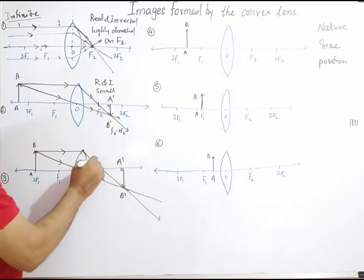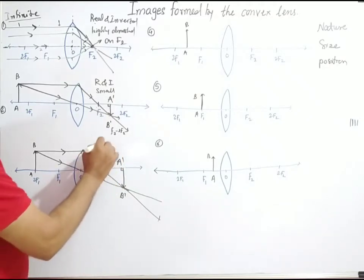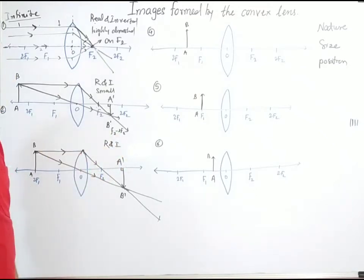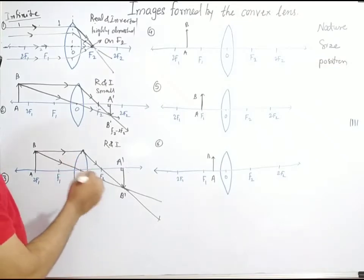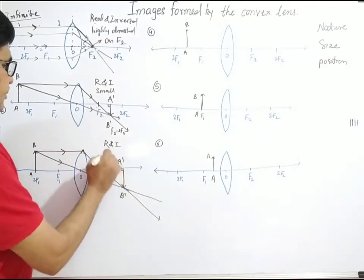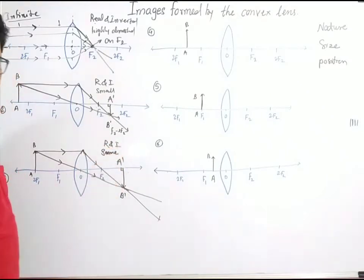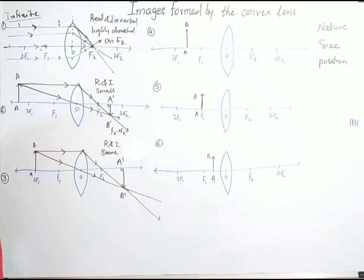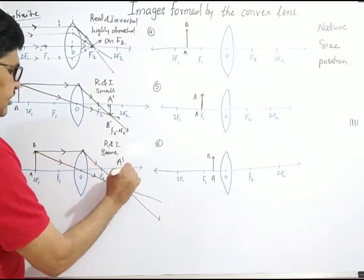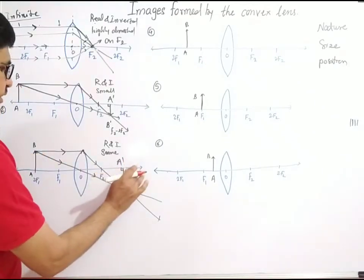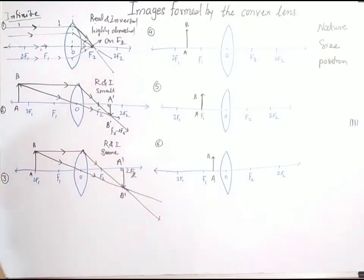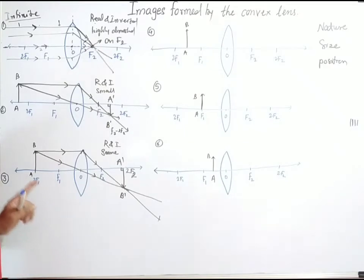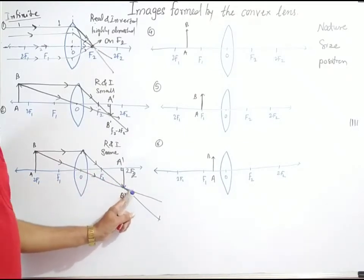The refracted rays are actually meeting together after refraction. The nature of the image is real and inverted. The size is the same as compared to the size of the object. If the object is placed on 2F1, the image is also produced on 2F2.